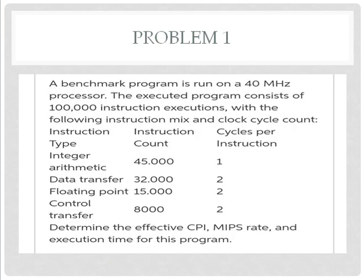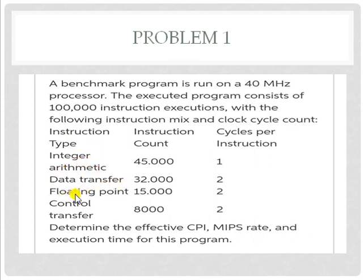Let's move to the first problem. A benchmark program is run on a 40 MHz processor. The executed program consists of 1 lakh (100,000) instruction executions with the following instruction mix and clock cycle count. There is a table representing instruction count and cycles per instruction for each instruction type: integer arithmetic, data transfer, floating point, and control transfer. The problem asks to determine the effective CPI, MIPS rate, and execution time for this program.